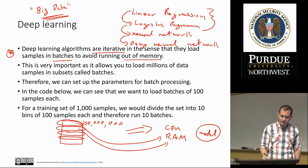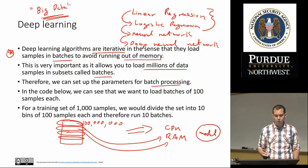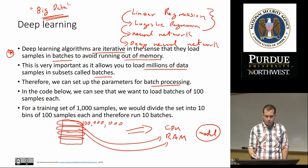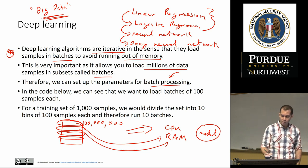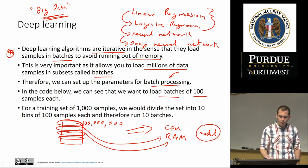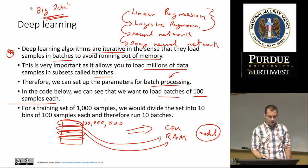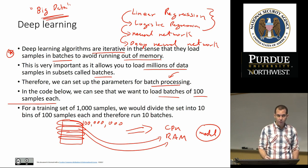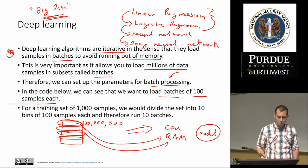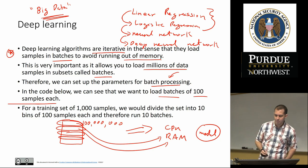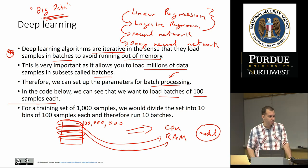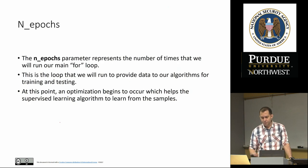This is very important as it allows you to load millions of data samples in subsets called batches. As part of the code you will have to account for batch processing. For example, if you want to load batches of 100 samples each for a training set of 1,000 samples, you divide the set into 10 bins of 100 samples each and therefore run 10 batches.